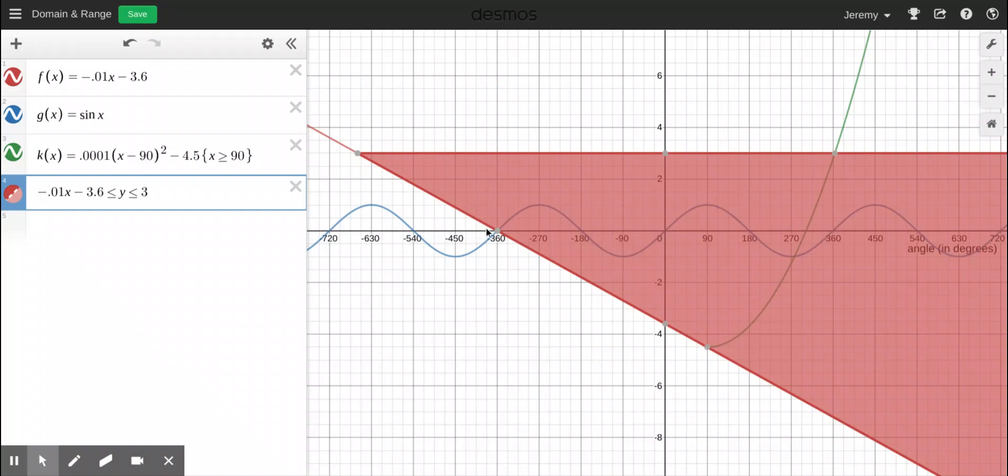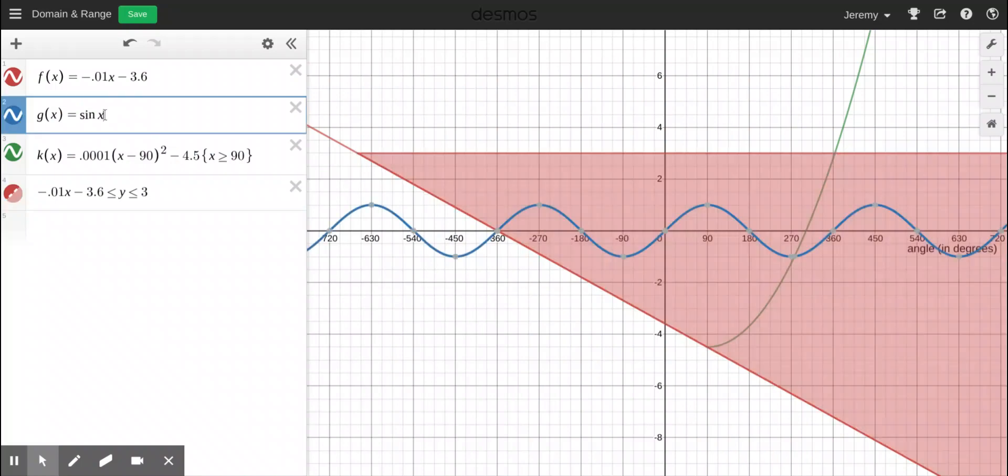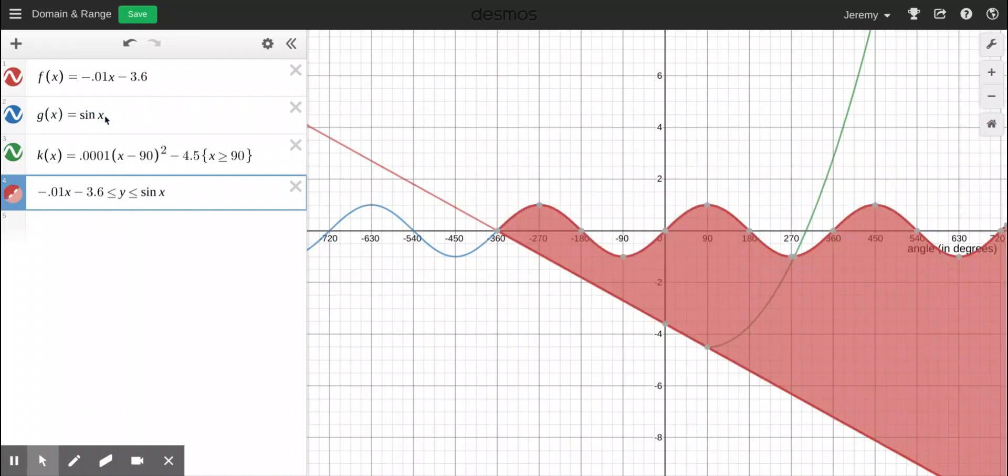So that's good. Now I want to change the top part. Instead of being at three, I want to change it to be the sinusoid. So I'm going to go here, copy that and paste it right there. Beautiful. So that's exactly what I wanted so far.